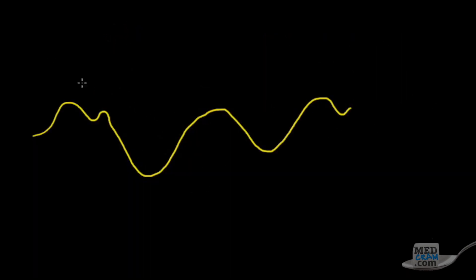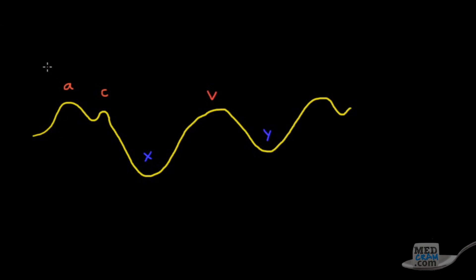Here is a sample of what the waveform looks like. At first it looks complicated, but it actually is not. We have certain waves that repeat. The first is the A wave — that first bump. The second is the C wave. Then we have an X descent, followed by a V wave, and finally the Y descent, after which the cycle starts over again.